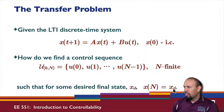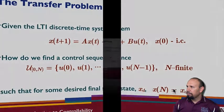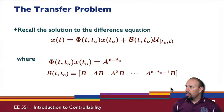So that's our desired state. Sometimes we'll see x subscript d, sometimes we'll see x subscript f. We can have it a number of different ways. So our transfer problem.